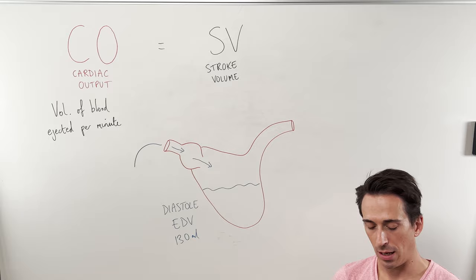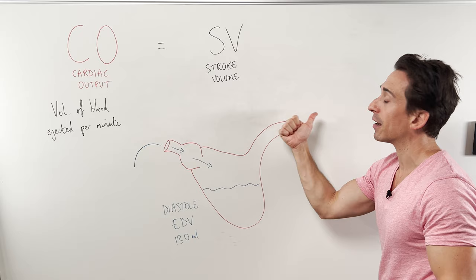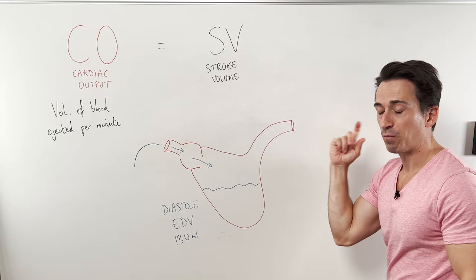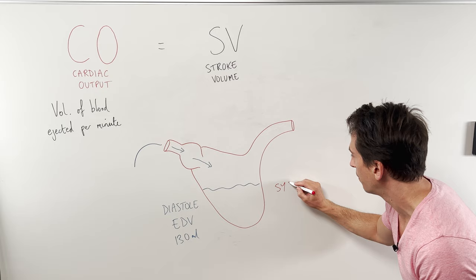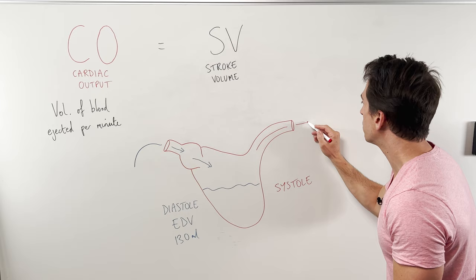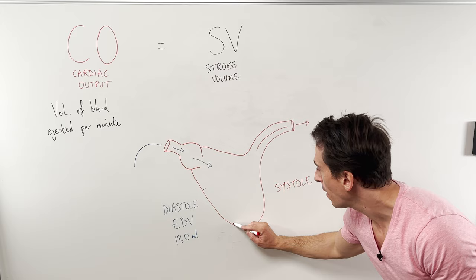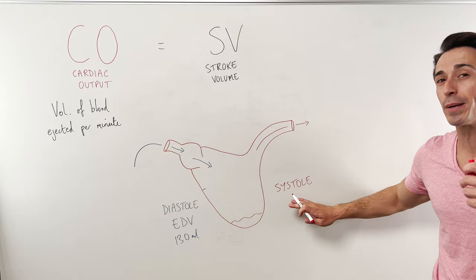Now what happens at the very end of relaxation? We have contraction. The muscles of the heart contract and push the blood out via the arteries — in this case via the aorta from the left ventricle. Contraction is termed systole. At the very end of contraction you will have ejected as much blood as you possibly can, but not all the blood exits — some remains. We call the remaining volume the end systolic volume, or ESV.